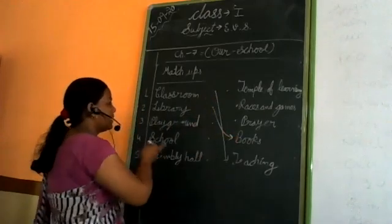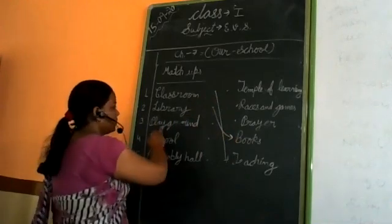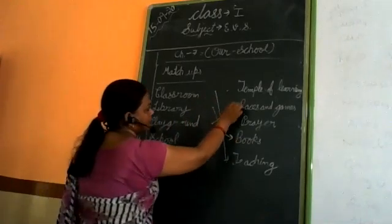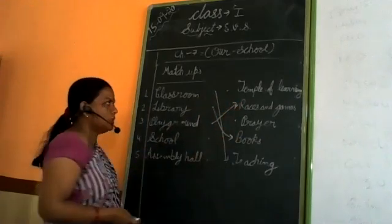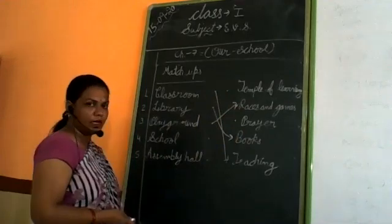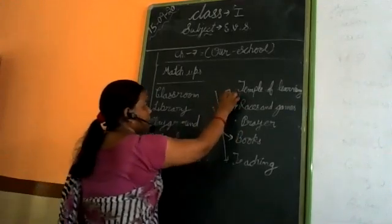Next. Playground. Playground, what do we do on the playground? We play games, right? We play. So playground... races and games. Next. School. What is school? Temple of learning, right? So we'll match this with what? Temple of learning.